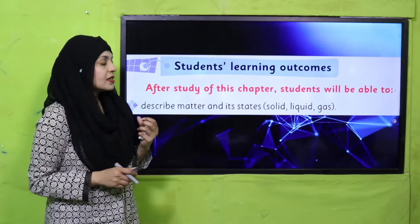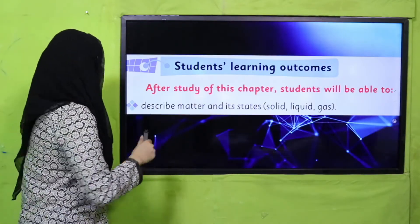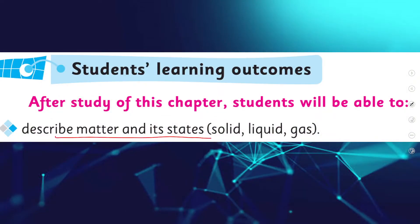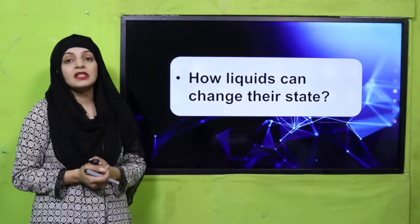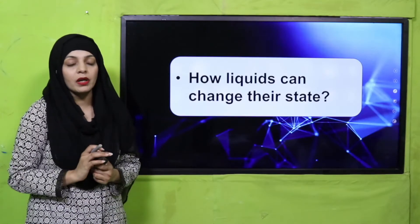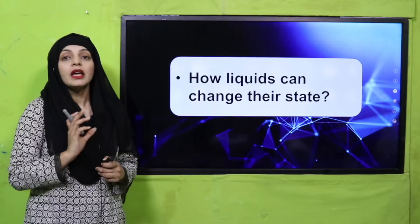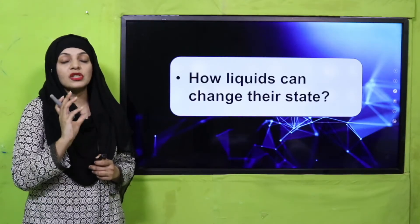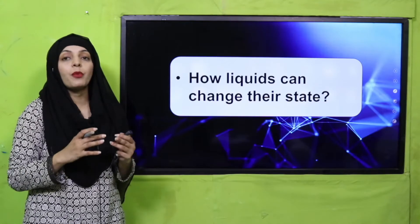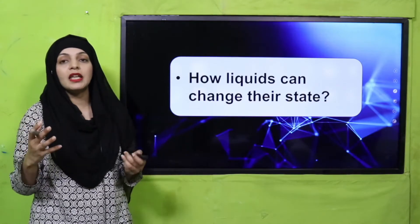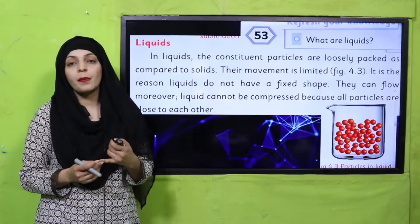My dear students, let's look at today's student learning outcome. In today's lecture, students will be able to describe matter and its state — aur woh state hai liquid. Pre-reading question: how can liquids change their state? Liquids apni state ko kaise change kar sakte hain? When they are subjected to excessive heating — bohat zada high temperature hota hai — then liquids can change their state. Please open page number 53 in your Science 4 books.